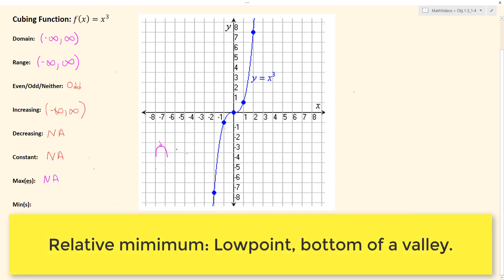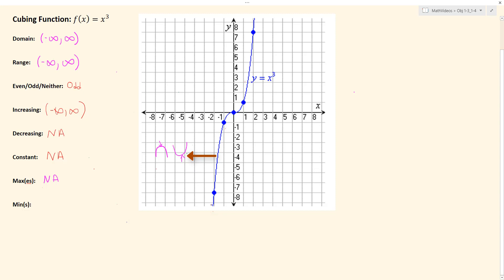Now for a relative minimum, we would think kind of the bottom of a valley, so it would be the low point. And so if we have any valleys or low points, we would call that a relative minimum.